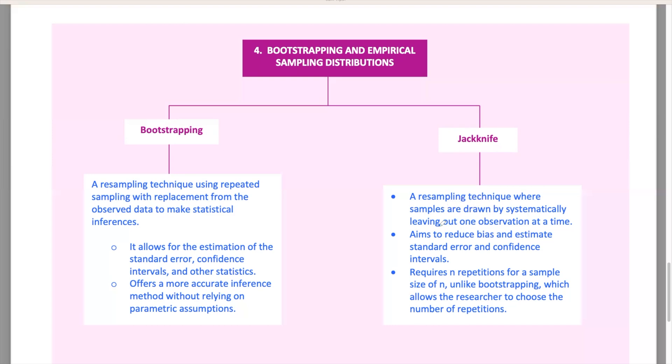The jackknife method is similar, but leaves out one observation at a time. It's used to reduce bias and find standard errors and confidence intervals. Unlike bootstrapping, it doesn't put observations back into the sample. Now, let's consider the jackknife method. Suppose you want to estimate the standard error of the mean return of a mutual fund over the past five years. Here's how you can apply the jackknife technique. First, calculate the mean annual return using all five years of data. Next, systematically leave out one year of data at a time and calculate the mean return for the remaining four years. Repeat this process for each year, resulting in five different mean returns. Use these leave one out means to compute the jackknife estimate of the standard error. This method helps you understand the variability and reliability of the mutual fund's mean return, showing how each individual year influences the overall performance.